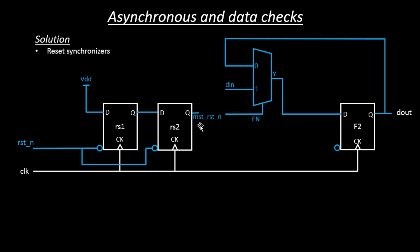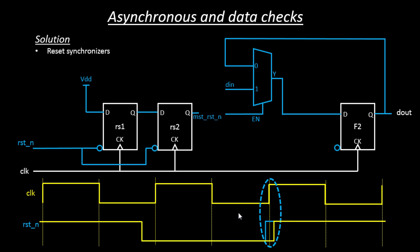Let me show you the waveforms for the master reset end and how it solves the problem of reset de-assertion. We'll start from the same problem that we saw in the last video — the area where whenever you de-assert your reset line, it led to metastability because it was happening very close to the active edge of the clock. Let's take the example where we de-assert the reset signal right next to the active edge of the clock and see what happens when this circuitry functions.